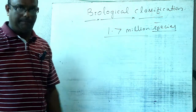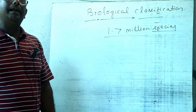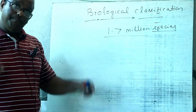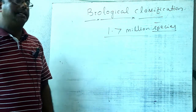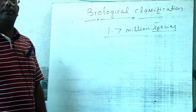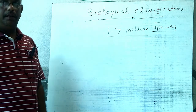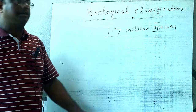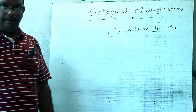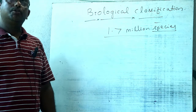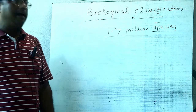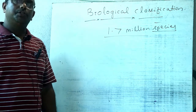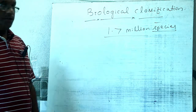Species means a group. Similar types of organisms which can breed among themselves are called a species. For example, all tigers constitute the tiger species, lions constitute the lion species, and elephants constitute the elephant species.